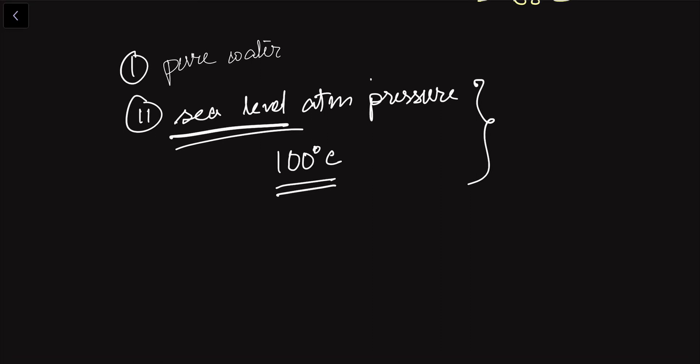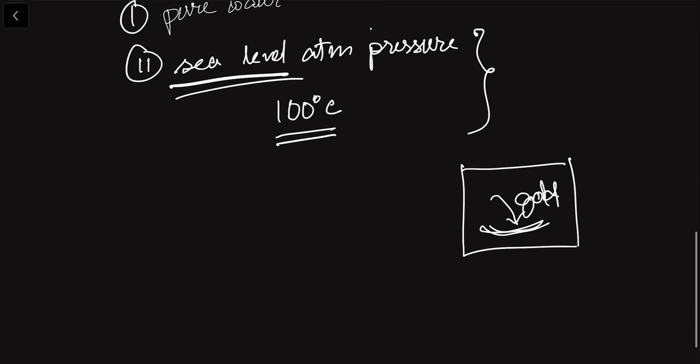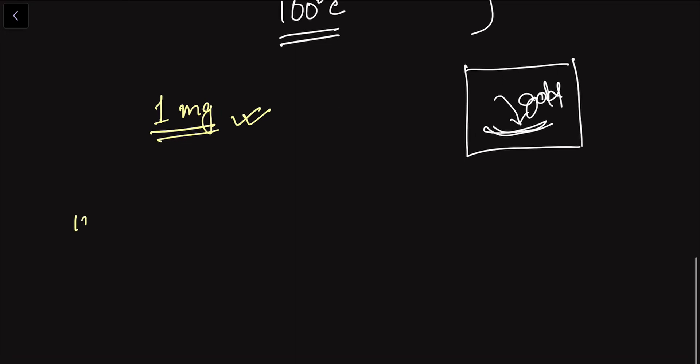Another example is the weighing balance used in gold jewelry shops, which is enclosed in a closed chamber. This is because wind from a fan or changes in atmospheric pressure could affect the measurement. For gold, you need accuracy of the order of one milligram, so the experimental conditions must be carefully controlled.